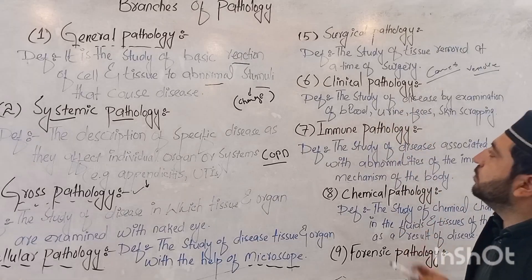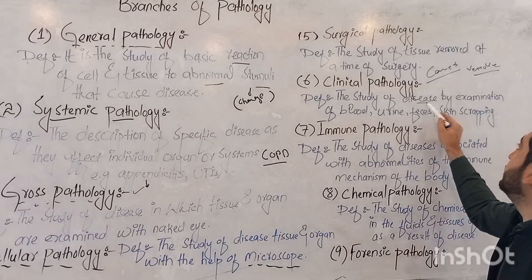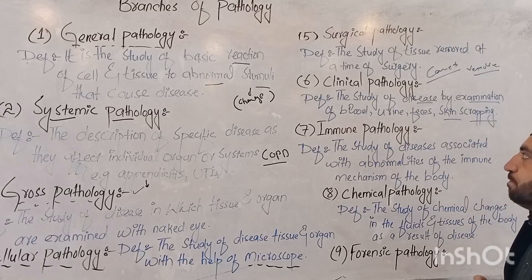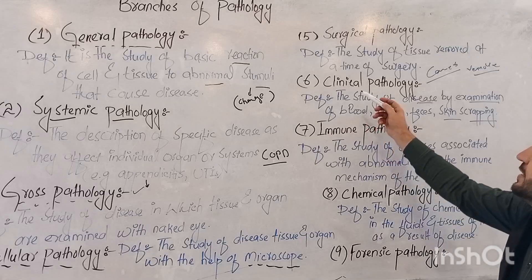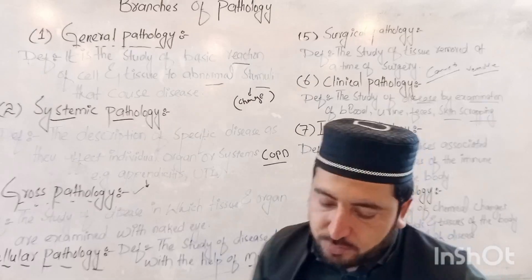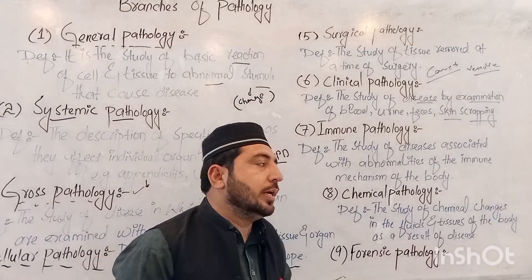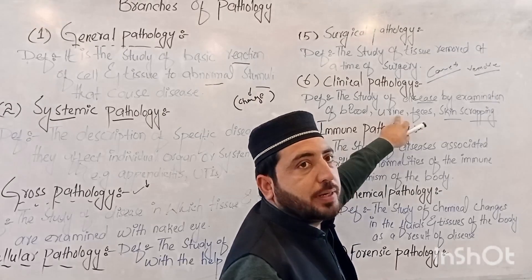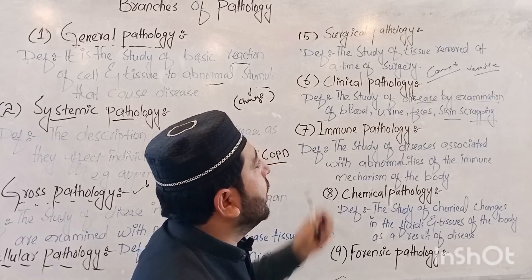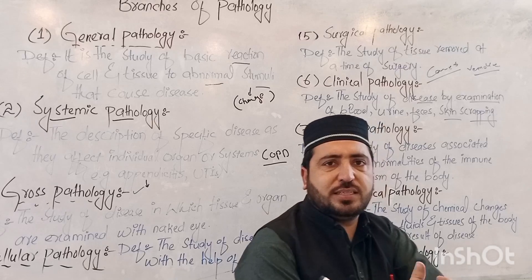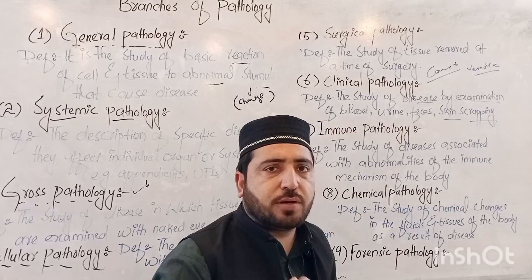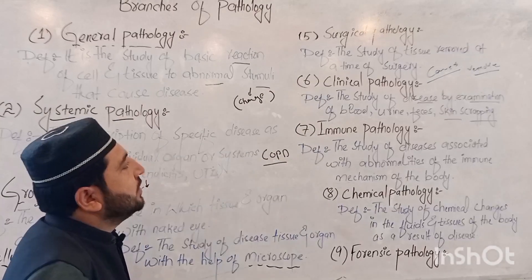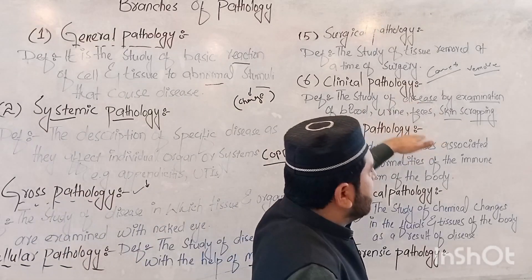Clinical pathology is the study of disease by examination of blood, urine, feces, and skin scraping. When a patient visits a doctor, samples such as blood, stool, urine, or skin scrapings are collected and examined to diagnose diseases. This is the routine clinical laboratory study.